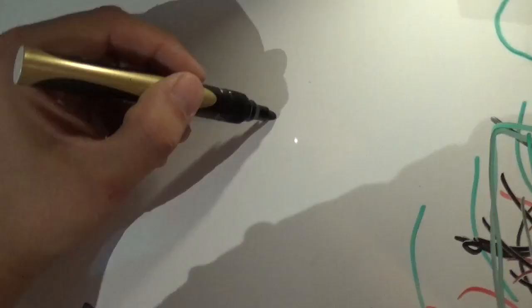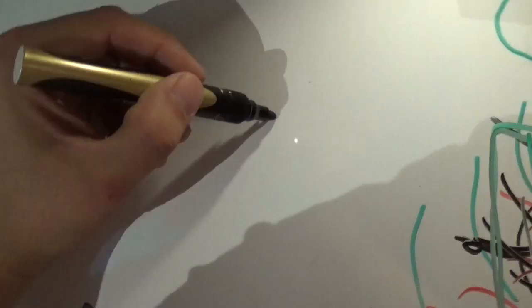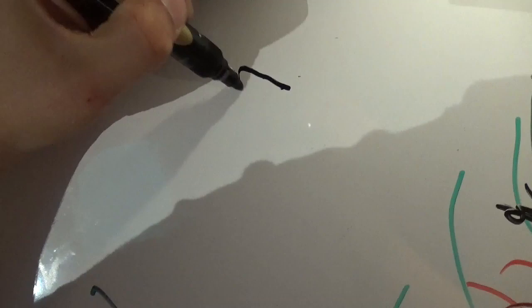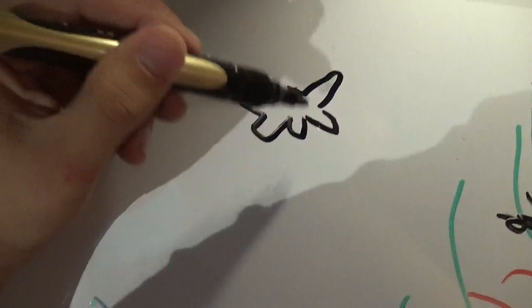So if a moth like this had tails on his hind wings, a bat would basically see him like this.